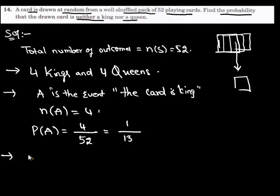Similarly, we denote B is the event which states that the card is queen.